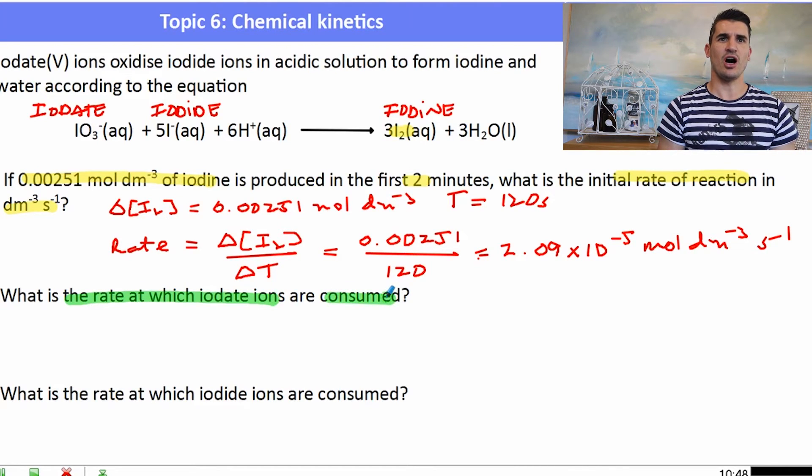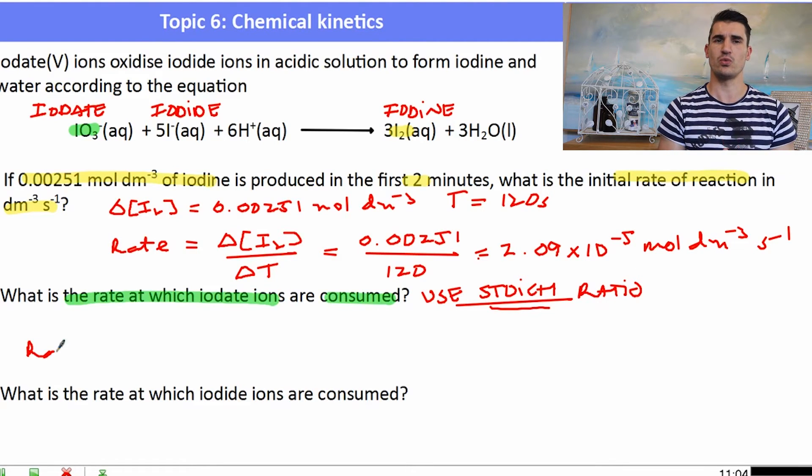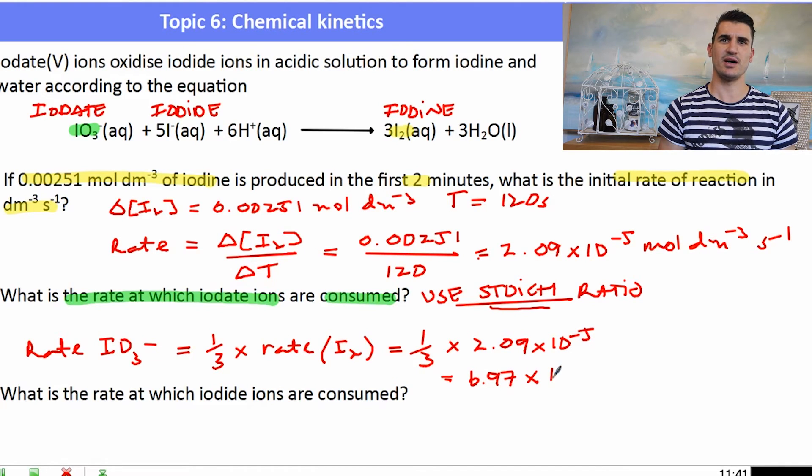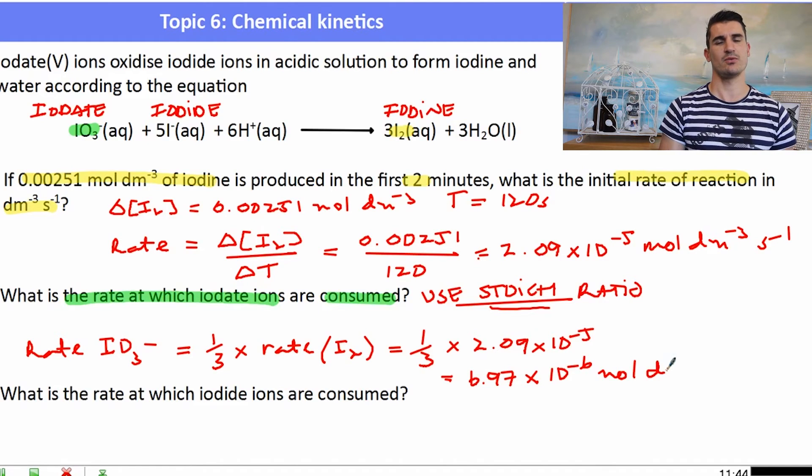What is the rate at which iodate ions are consumed? Now iodate is IO3-. Now what this question is asking us to do is to use the stoichiometric ratio to work out the rate. So we're going to go back to our stoichiometry and use the ratio to work that out. So the rate of IO3- consumption because it's a reactant, well what's the ratio between those two things? Well it's 1 to 3. So it's a third. 1 over 3 times the rate of I2. So it'll be a third times the rate of the iodine production. So I plug that into my calculator and then I can work out the rate for the iodate. So the rate would be 6.97 times 10 to the minus 6 mole per decimetre cubed per second. We always need to make sure we write the units for any calculation question.